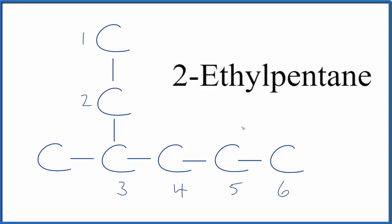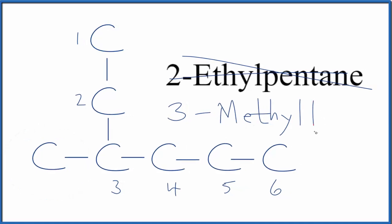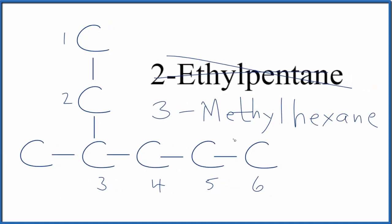So for that reason, when we name this, we shouldn't call it 2-ethylpentane. We should call it 1, 2, so there's the 3, 3-methyl. And then we have 6 carbons in the chain, so it should be hexane. So the correct name for this structure isn't 2-ethylpentane, it's 3-methylhexane.